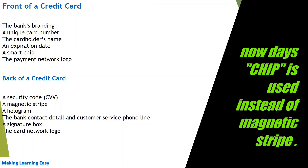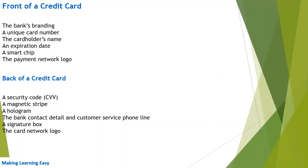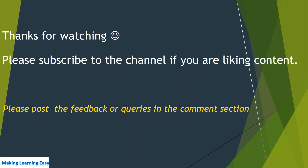At the back of the credit card there is a magnetic strip, hologram, or some customer care numbers, signature box, and also the card network logo like Visa, Mastercard, Discover, American Express, etc. That's all about credit card numbers and the important points we discussed. Thanks for watching — see you in the next video.